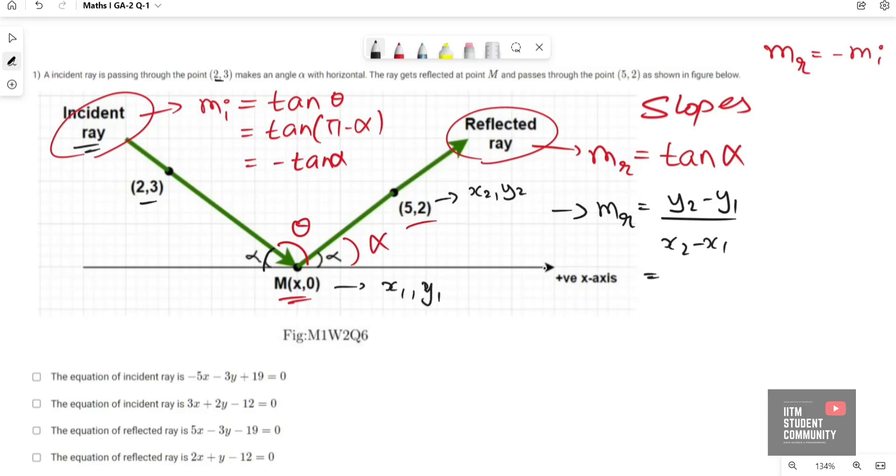Let us take (5,2) as (x2, y2) and point M(x,0) as (x1, y1). By substituting we get (2 minus 0) divided by (5 minus x). Slope of incident ray m_I is equal to, let us take (2,3) as (x2, y2) and M point as (x1, y1).